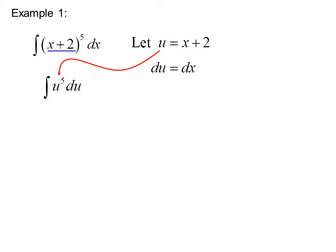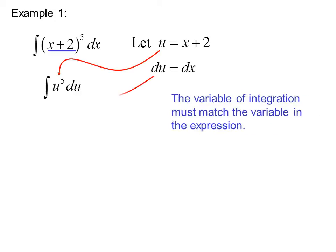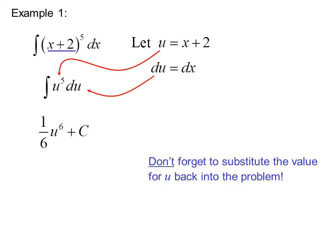We can substitute in and get the integral of u to the fifth, du. The variable of integration must match the variable in the expression. Now that's easy to integrate. We get 1 sixth u to the sixth plus c. Don't forget to substitute the value for u back into the problem. So our answer is x plus 2 to the sixth over 6 plus c.